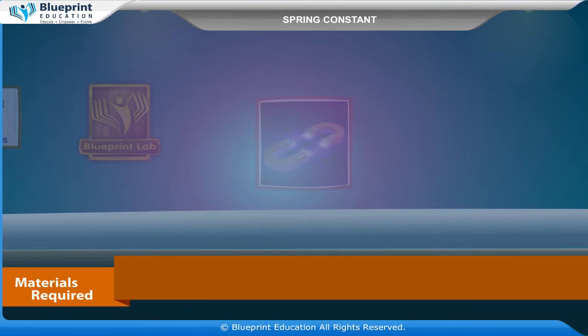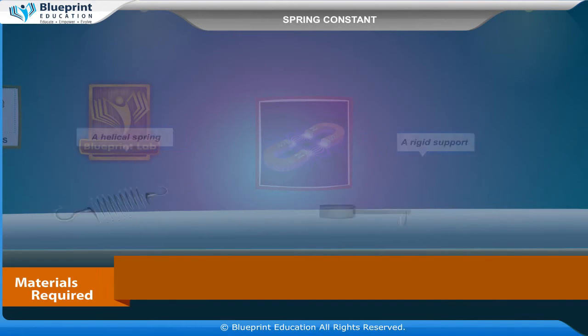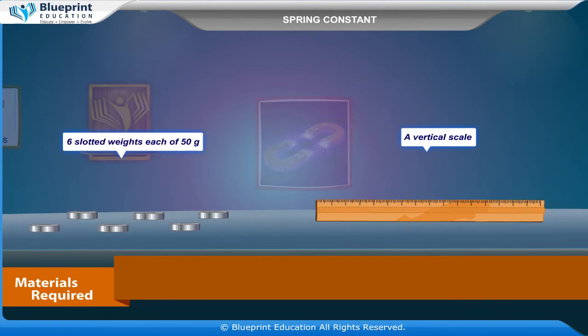The materials required are: a helical spring, a rigid support, a pointer, a hanger, six slotted weights each of 50 grams, and a vertical scale.